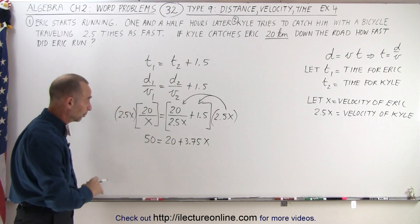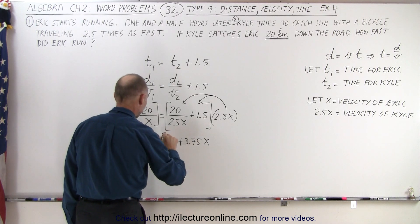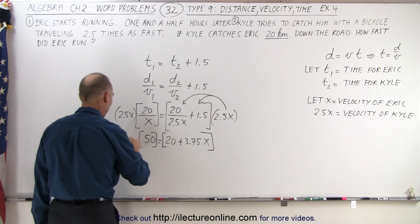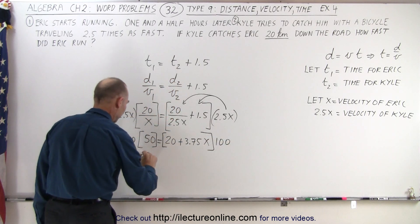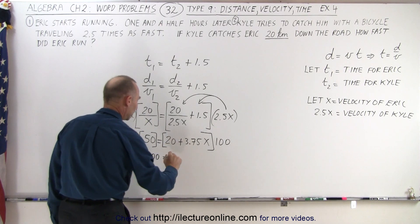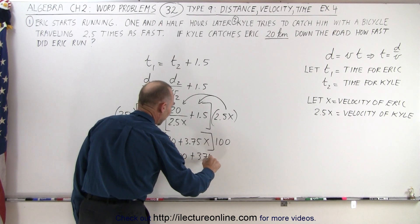Next we need to get rid of the decimal. To do that we're going to multiply both sides by 100. So we multiply both the left and the right side by 100, which means on the left side we get 5,000. On the right side we get 2,000 plus 375x.